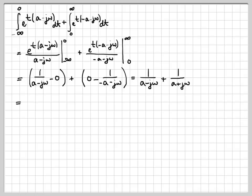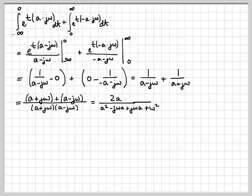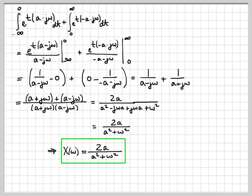To add these two pieces together, we get a common denominator by cross-multiplying. The numerator becomes (a + jω) + (a - jω) — the jω terms cancel, and the a's add, giving 2a. The denominator expands to four terms: a² minus jωa plus jωa plus ω² (since j·(-j) = 1 with the extra negative). The ±jωa terms cancel, leaving a² + ω². So the final Fourier transform is X(ω) = 2a / (a² + ω²).